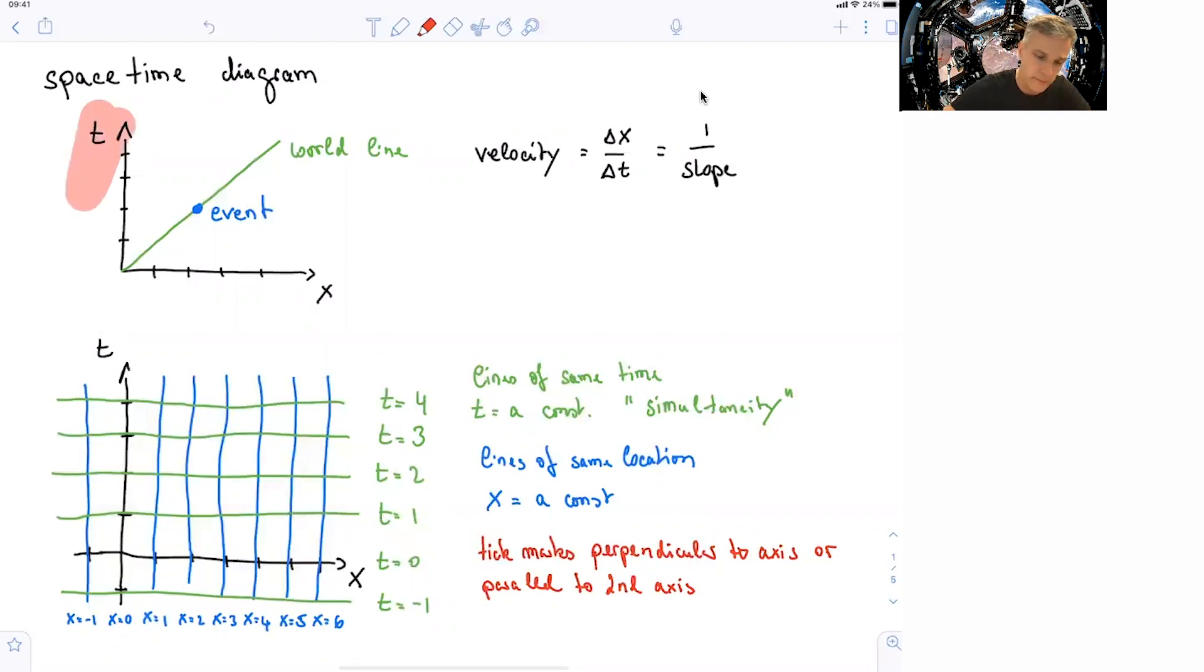So what is a space-time diagram? Here's an example. You have an x-coordinate and a t-coordinate for space and time. I plotted an event in blue here, and the world line of events.